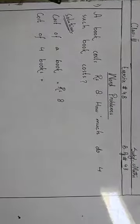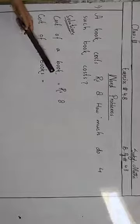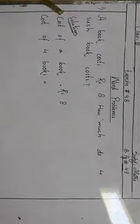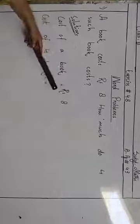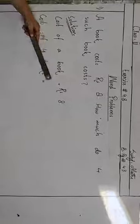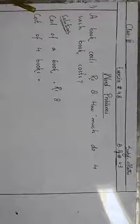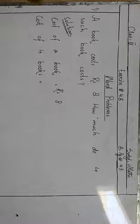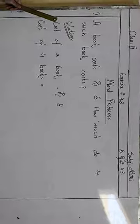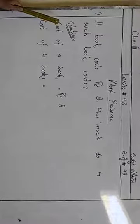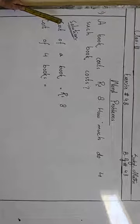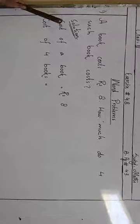So, we will choose what the solution is. We will write the cost of 1 book as Rs 8. We will tell you how much the 4 books will be. So, what do we do in class? We will do plus, minus, or multiply. How do we know? Because the book has been told, we have told the 4 books. We will multiply it.